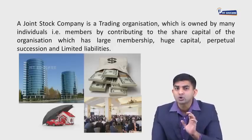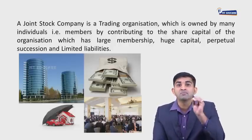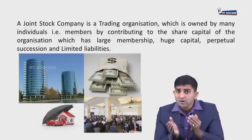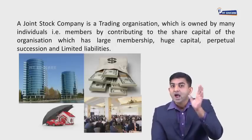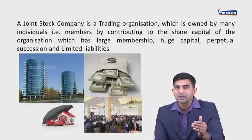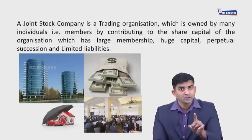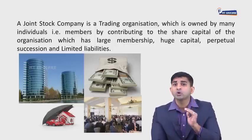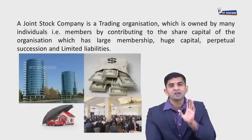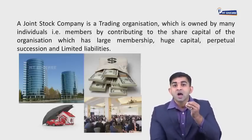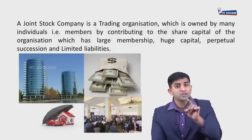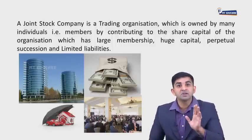In a joint stock company, there is no restriction on the number of members — a joint stock company can have millions of shareholders, so the company can raise huge capital. They have perpetual succession, meaning long-term stability, because the death of a shareholder or director does not affect its overall functioning. Shareholders have limited liability, meaning they are liable only to the extent of shares purchased, so their personal property is 100% secured.